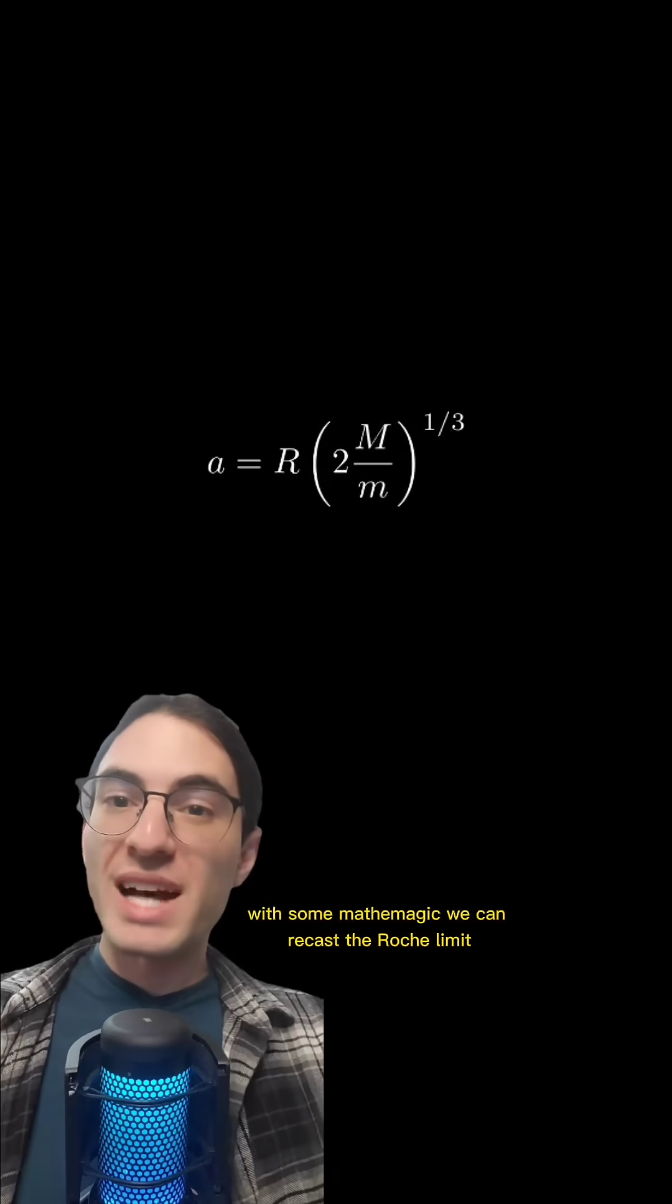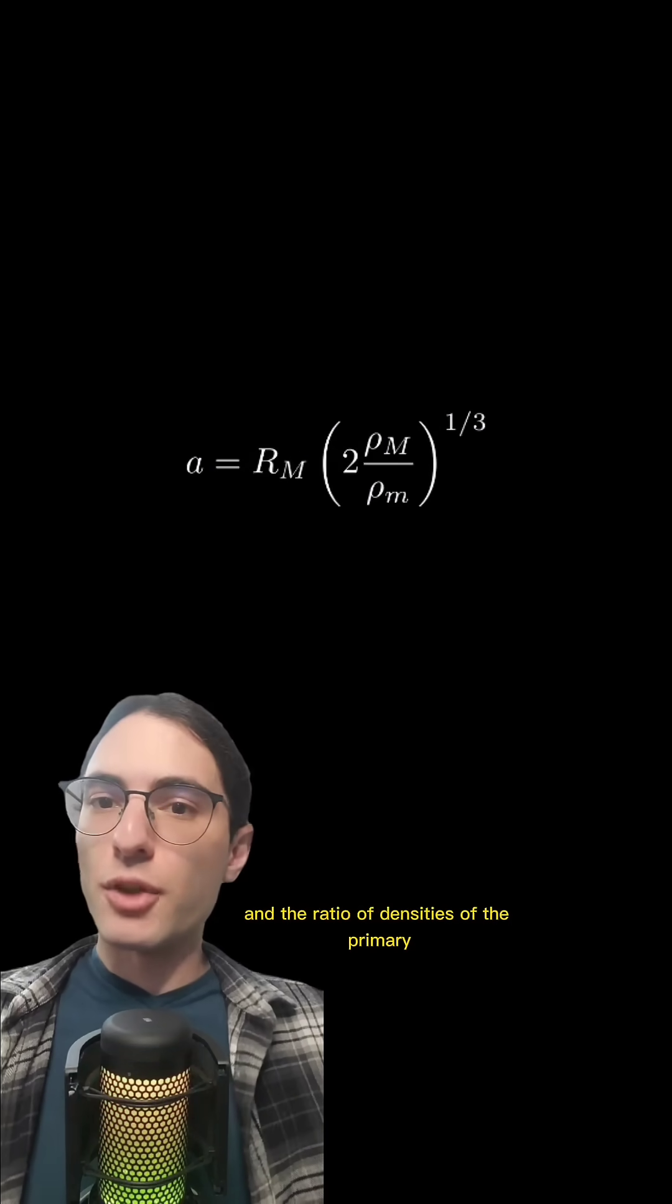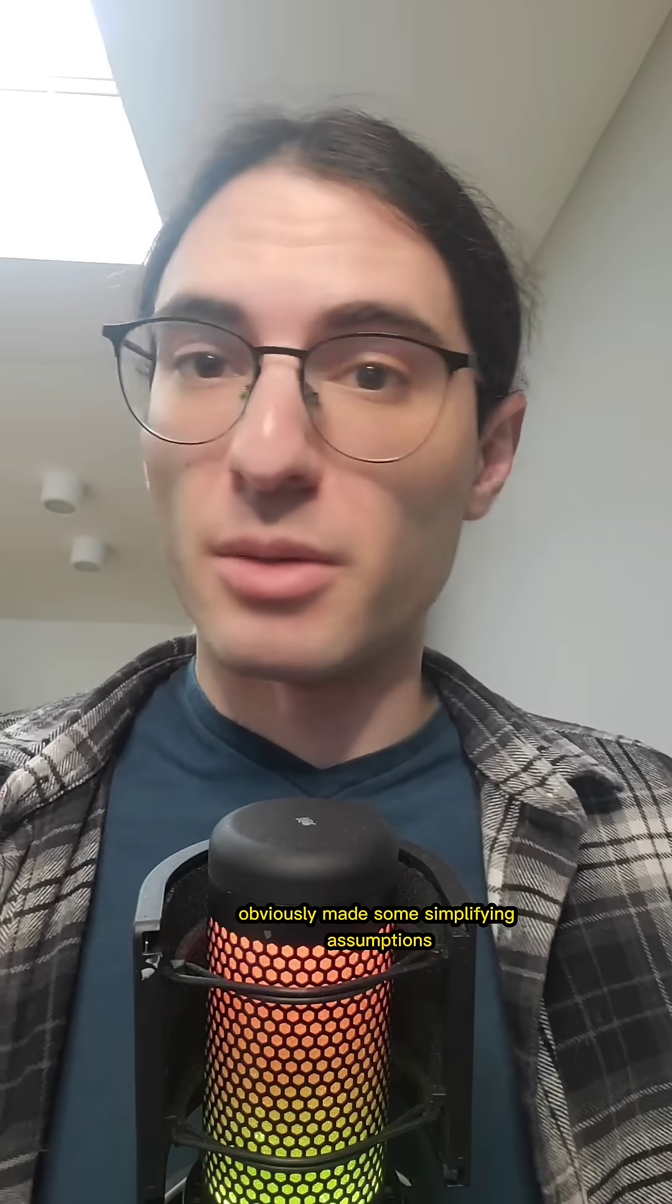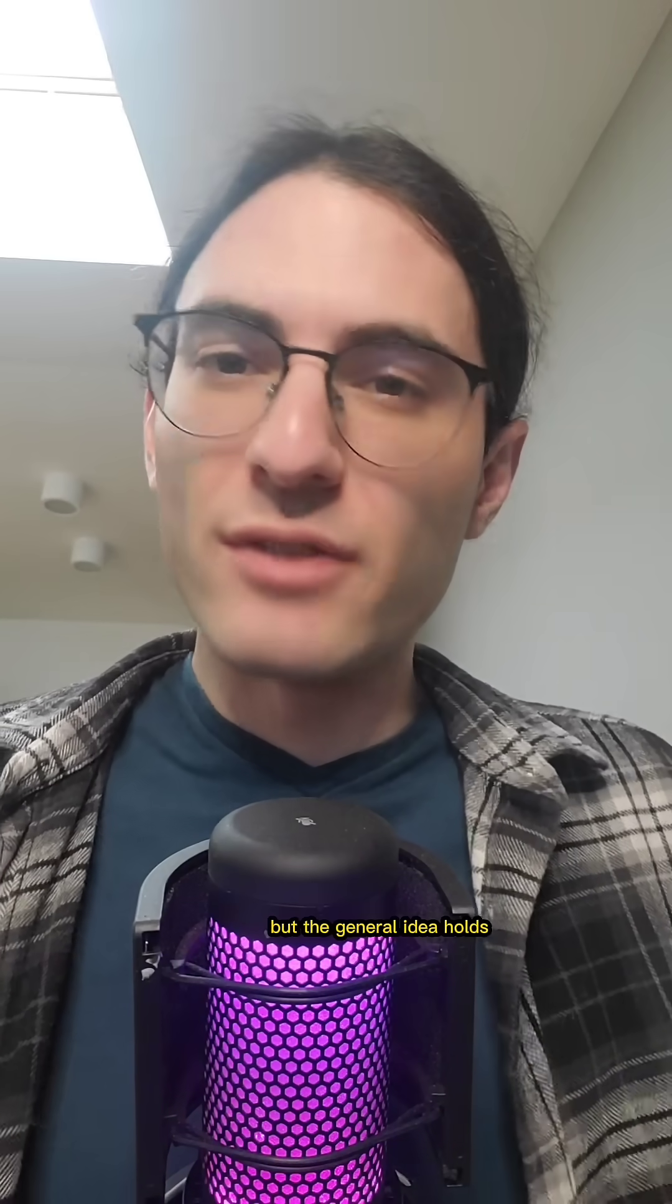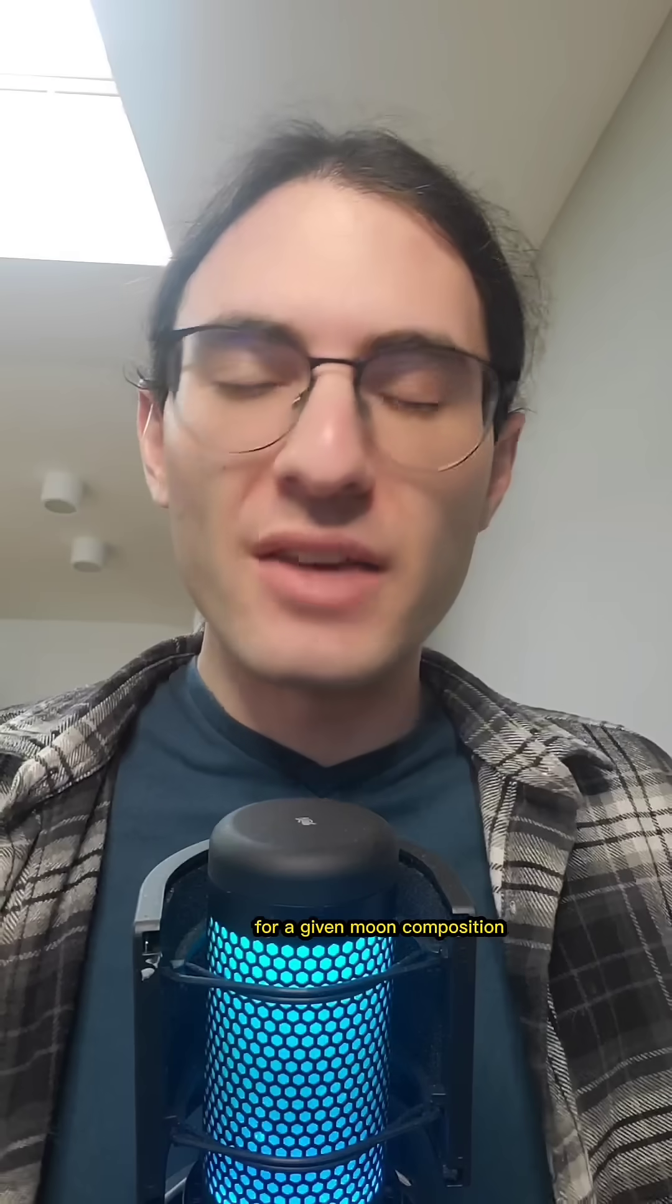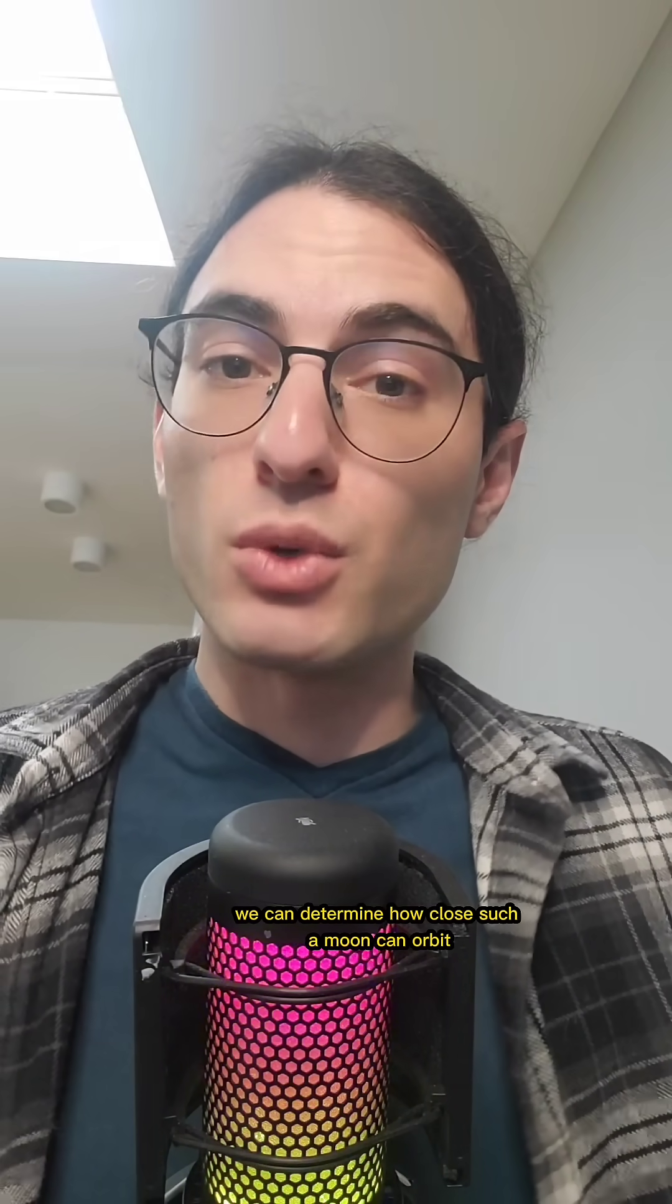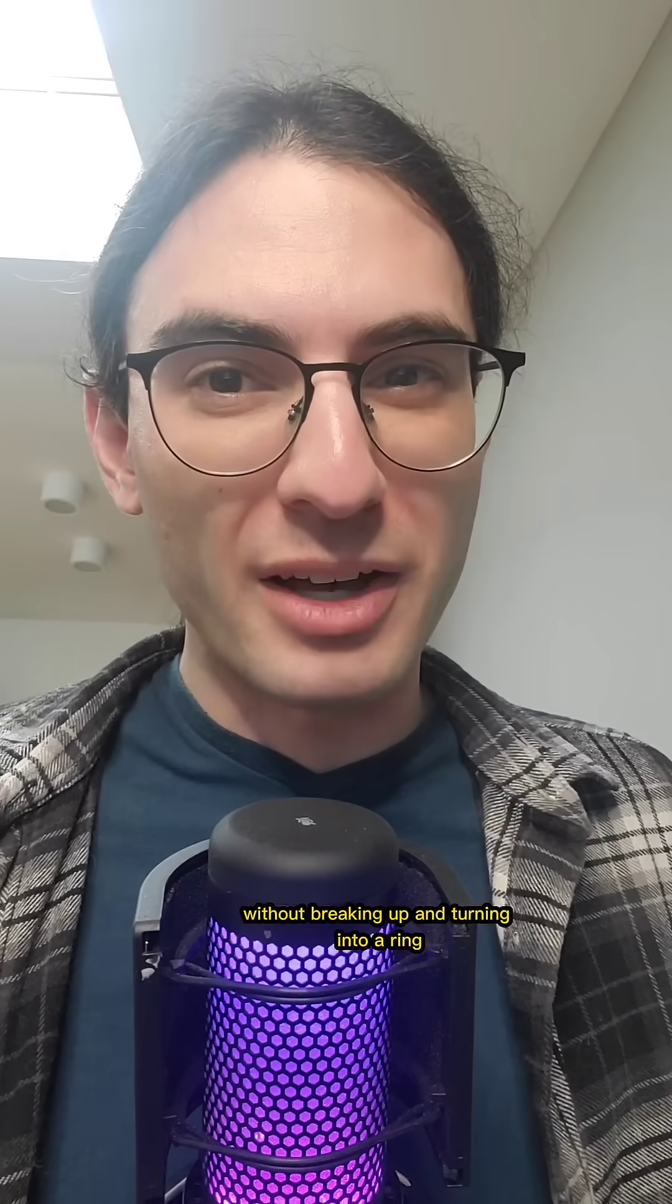With some math magic, we can recast the Roche limit in terms of the radius of the primary and the ratio of densities of the primary and secondary. Now those computations obviously made some simplifying assumptions, but the general idea holds even if we make it more realistic. Regardless, the takeaway of all of this is that for a given moon composition, which informs its density, we can determine how close such a moon can orbit its primary without breaking up and turning into a ring.